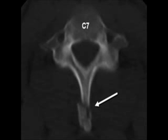This is a CT scan in another patient with a clay shoveler's fracture. The white arrow is pointing to the fracture through the spinous process of C7.